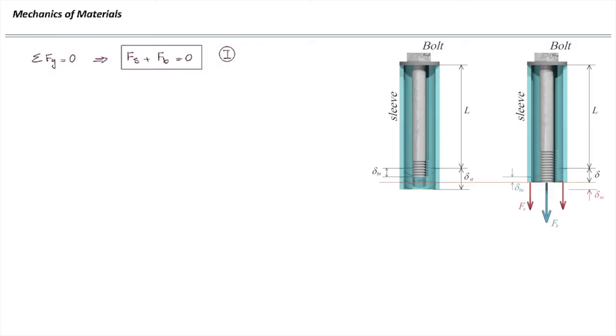In the second step, I'm going to go and determine how much would be the deformation in sleeve and the bolt. Let's start with the bolt. Delta B is delta BE plus delta BT. Elastic deformation and thermal deformation.